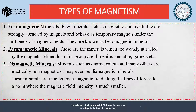Now we learn about the types of magnetism. It is divided into three: ferromagnetic, paramagnetic, and diamagnetic. First, ferromagnetic minerals: few minerals such as magnetite and pyrrhotite are strongly attracted by magnets and behave as temporary magnets under the influence of magnetic fields. They are known as ferromagnetic minerals.